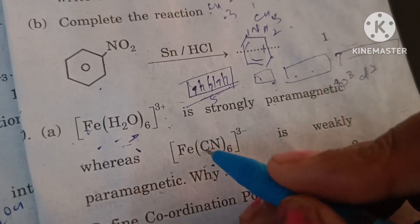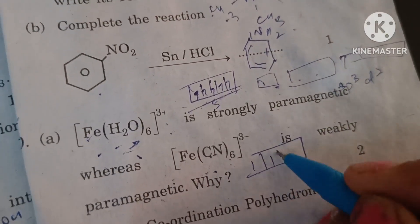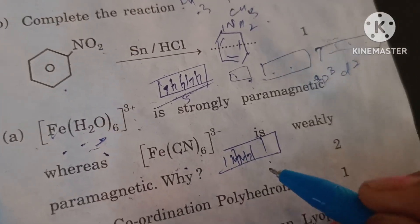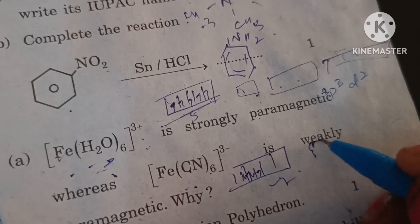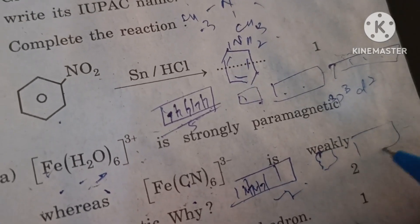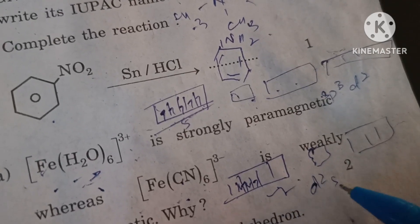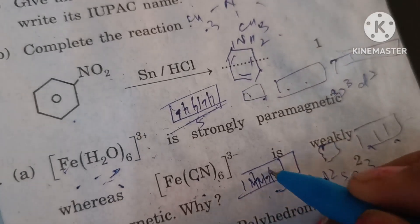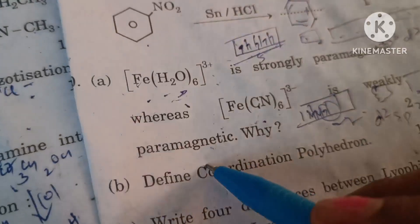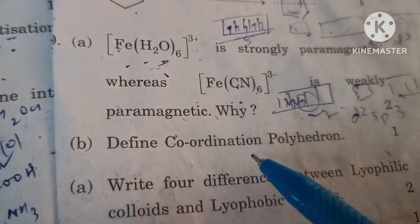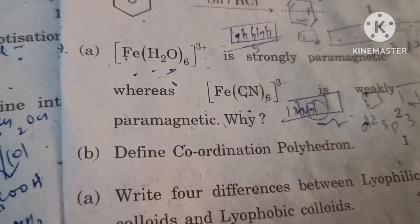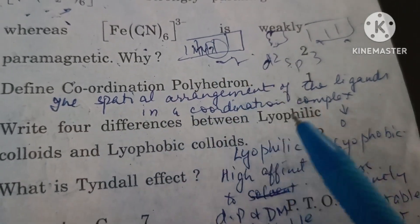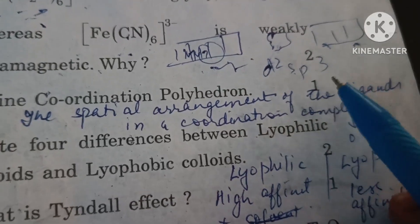Cyanide ligand is a strong field ligand. It causes pairing of electrons in iron, so the five electrons get paired up in three orbitals and inner d² orbitals are available along with one s and three p orbitals to form d²sp³ hybridization. This is an inner orbital complex and only one unpaired electron is present, so it is weakly paramagnetic. Define coordination polyhedron: the spatial arrangement of the ligands in a coordination complex is called coordination polyhedron. For example, different coordination polyhedrons can be octahedral, tetrahedral, and square planar.